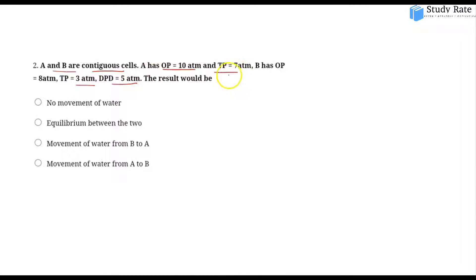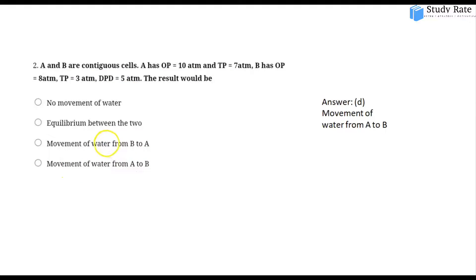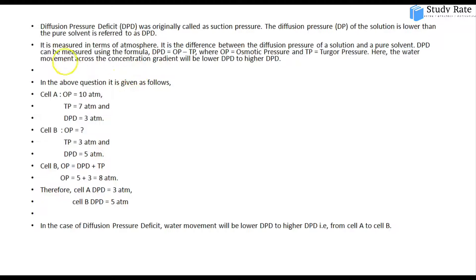The next question involves water movement and equilibrium between two cells. We need to determine the movement of water from B to A or from A to B, based on DPD values provided.